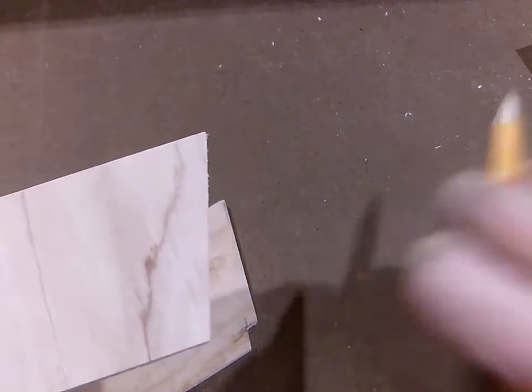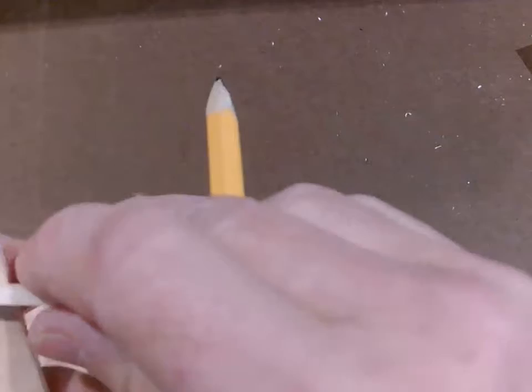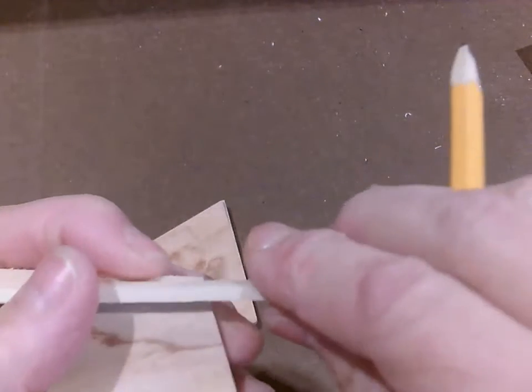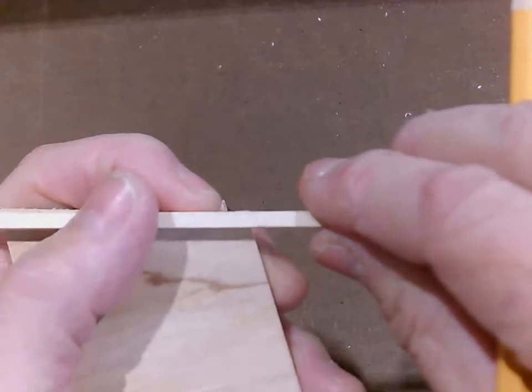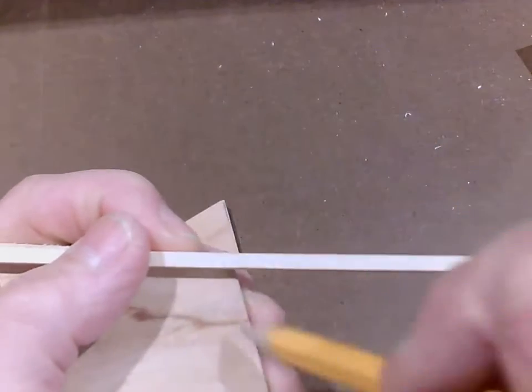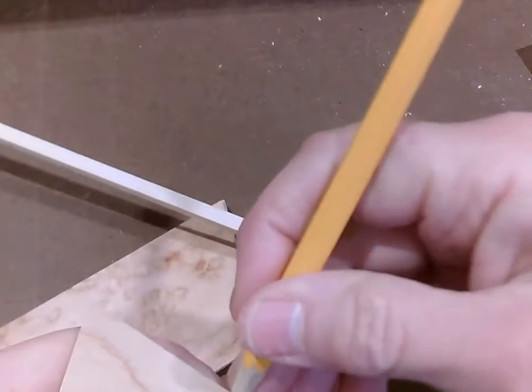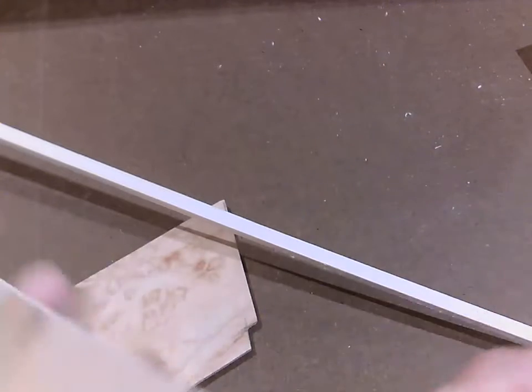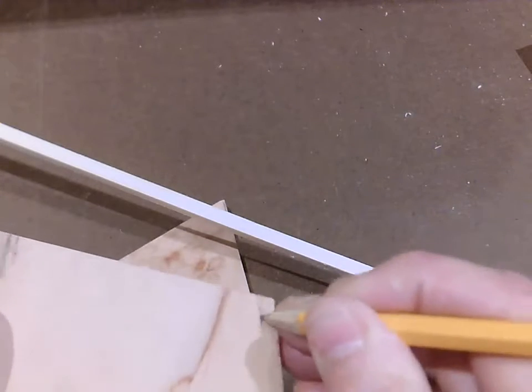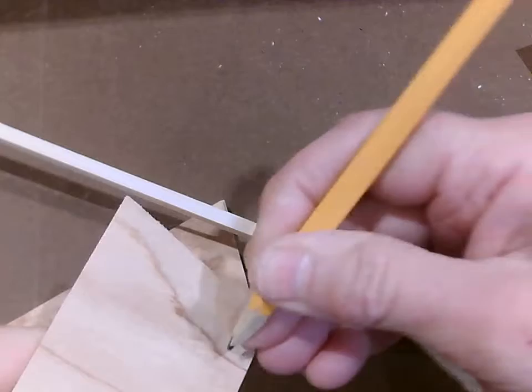So we're going to mark it. You can take the chine that you have and just line it up right on the edge there and mark that. We know that's about how big it has to be, and you can make it a little bit bigger. So I'm moving it over to this side so I have both of them.